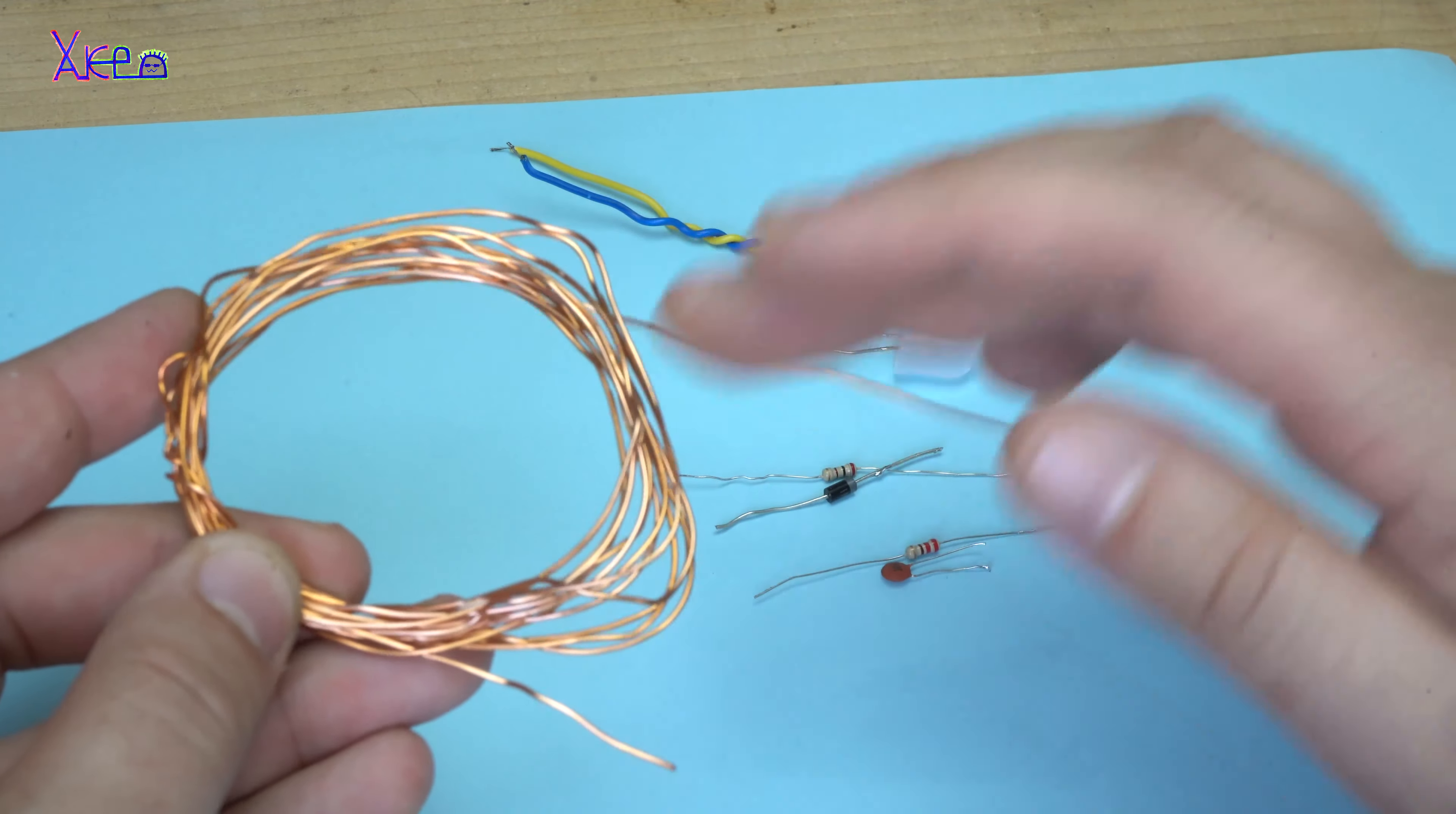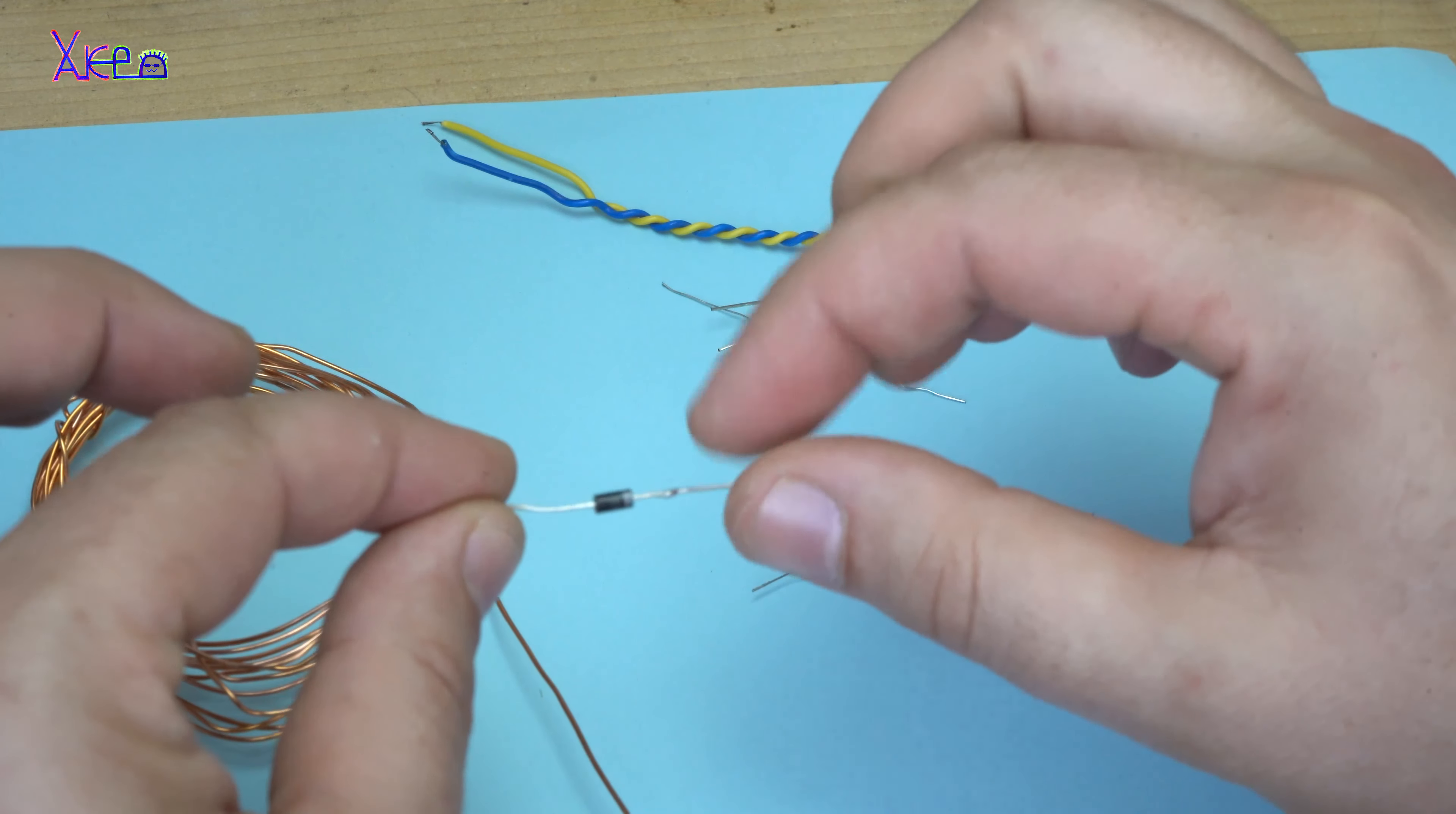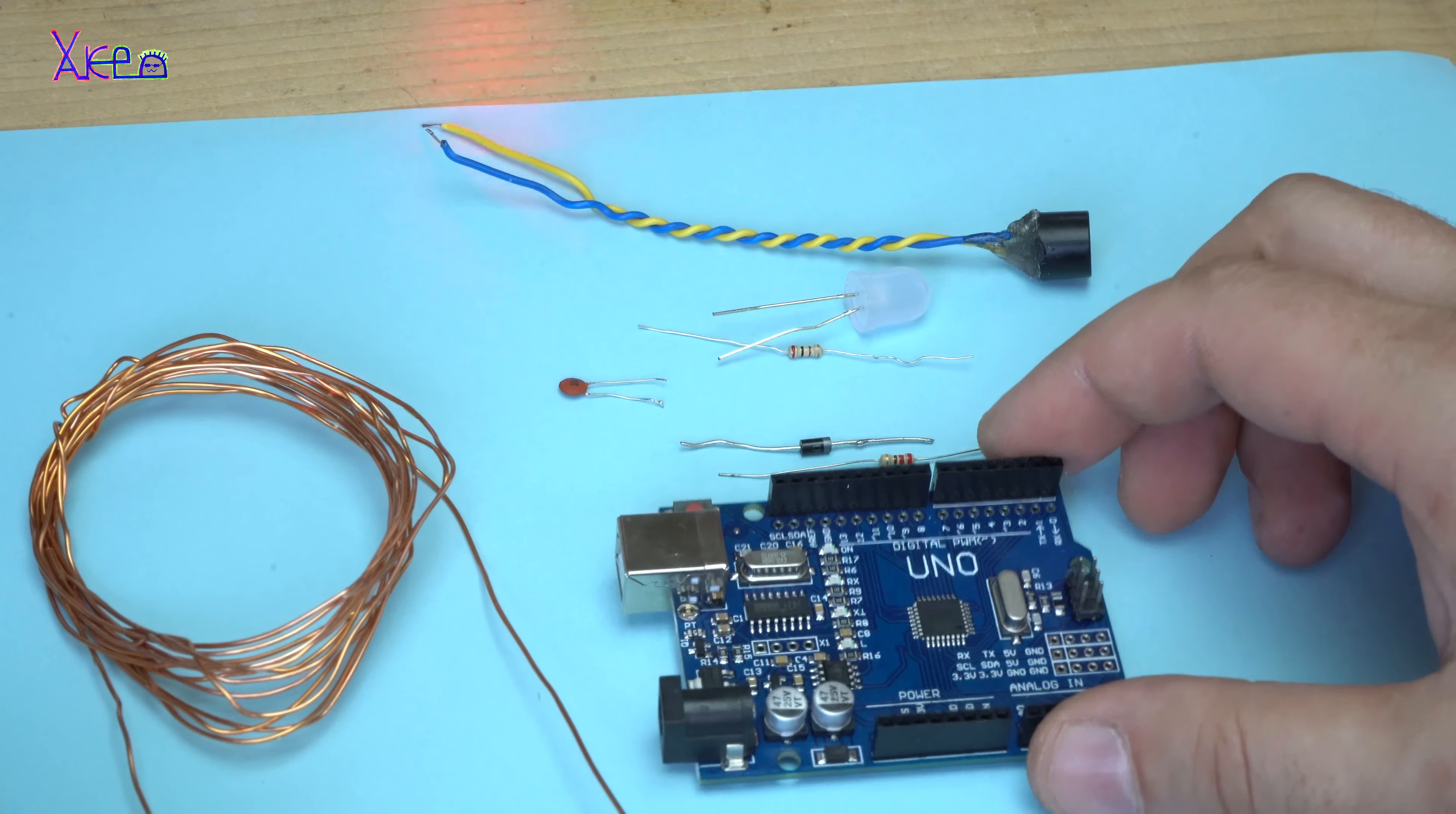First thing is this solid copper wire. You will need around three meters, a buzzer, passive buzzer, not active, one LED, one resistor for the LED one kilo ohm, one diode, rectifier diode. This one is 1N4007, another resistor 220 ohms, a capacitor 100 nanofarads, and the main part of course Arduino board.